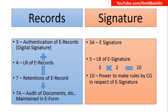Now, signatures. While records started with Section 3, signatures start with Section 3A — that is electronic signature. Then Section 5 is the legal recognition of electronic signatures, whereas Section 4 was for legal recognition of electronic records. From 5, raise it to the power 10 — that gives us Section 10, which is the power to make rules by the Central Government in respect of electronic signatures. Note that it is just for electronic signatures, not for records.